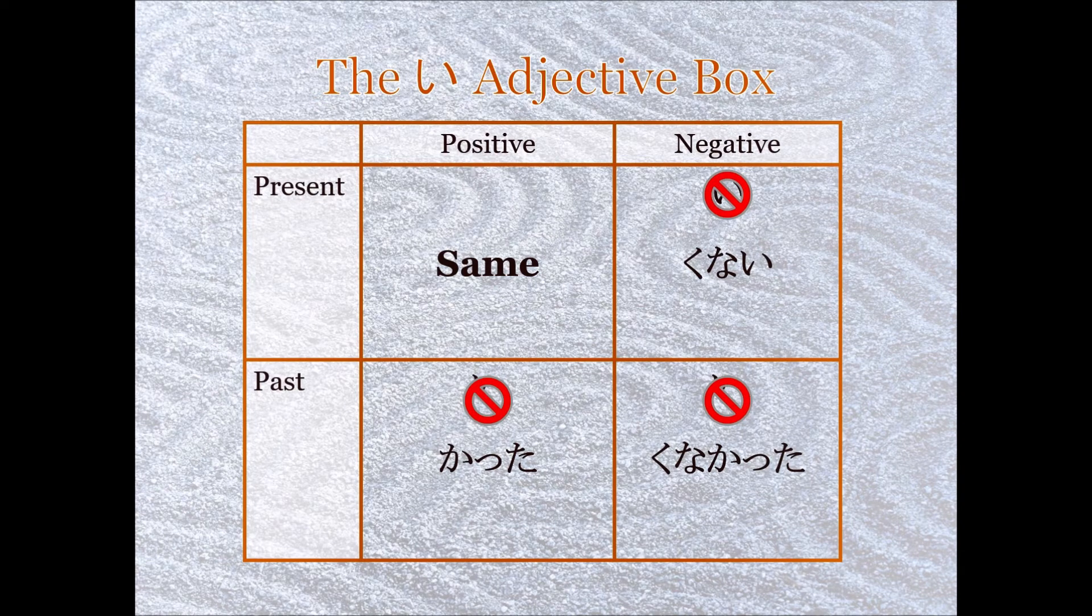If I wanted to make it negative, I would drop the i from samui to samu and have kunai. If I wanted to have it past, I would drop the i from samui to samu and add katta. And finally, the same method for past negative, drop the i, add kunakatta.